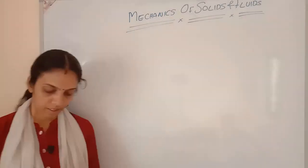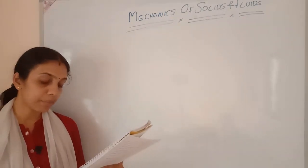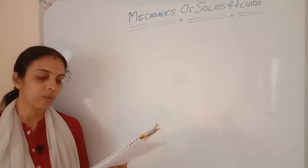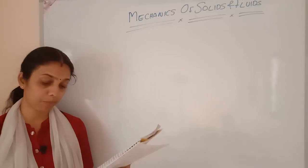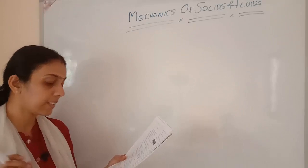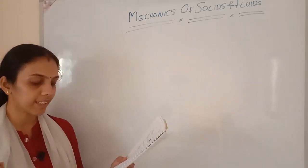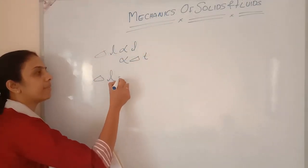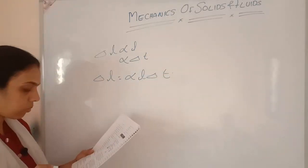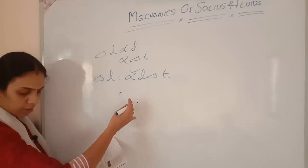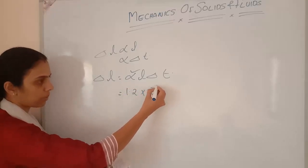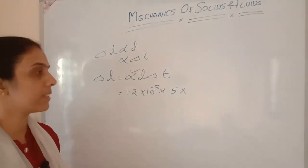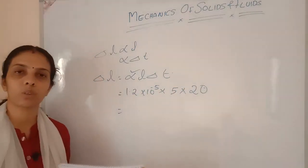A steel beam of length 5 meters is kept at a temperature of 20°C. On a hot day, the temperature rises to 40°C. What is the change in its length due to thermal expansion? We know delta L equals alpha × L × delta T. The coefficient of linear expansion of steel is 1.2 × 10⁻⁵. Original length is 5 m, change in temperature is 20°C. Solve to find delta L.